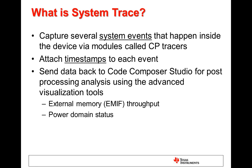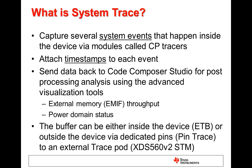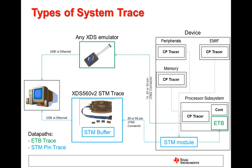System Trace is not available on all devices, and similar to Core Trace, for the ones who have this feature, there are two implementations with different levels of complexity: Embedded Trace Buffer or ETB, and STM pin trace using an external emulator pod. System Trace can be done either via the ETB or using external pins and an XDS 560 V2 STM. All the different system components of a device communicate to the STM module via the CP Tracer modules, which either store the information in the internal ETB buffer, or send it to the external pins to be stored in the STM buffer of the XDS 560 V2. When using ETB, a smaller sample of system messages operates only in circular mode, and no hardware changes are necessary, so it can be used with any XDS emulator.